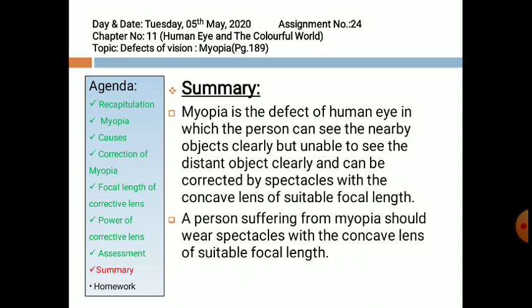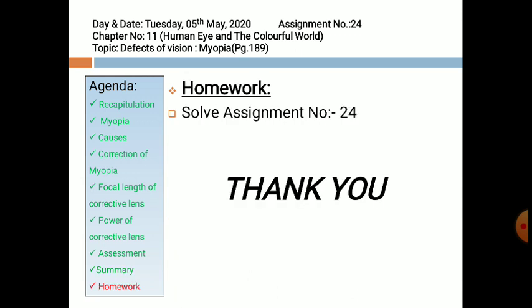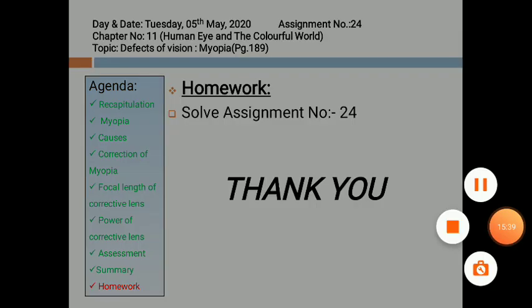Myopia is the defect of the human eye in which the person can see nearby objects clearly but is unable to see distant objects clearly, and it can be corrected by spectacles with a concave lens of suitable focal length. A person suffering from myopia should wear spectacles with concave lenses of suitable focal length. In the last, there is homework for you: you have to solve assignment number 24. Thank you and have a nice day.